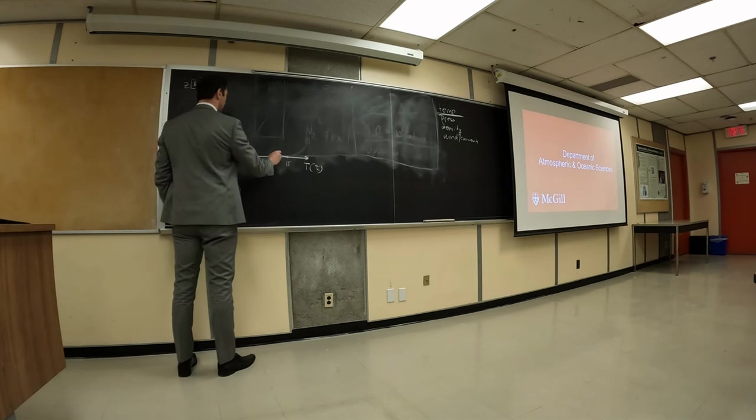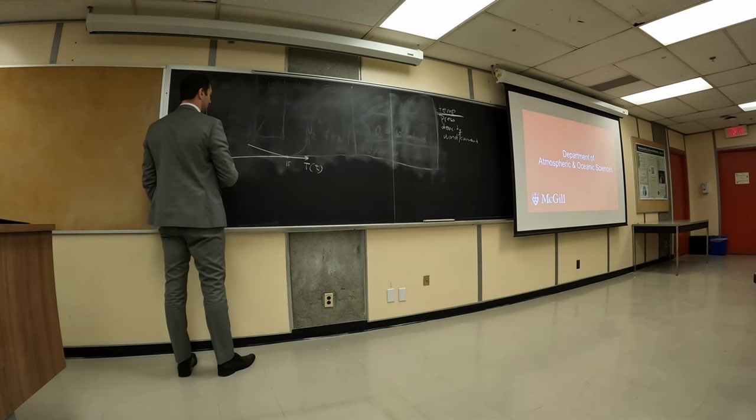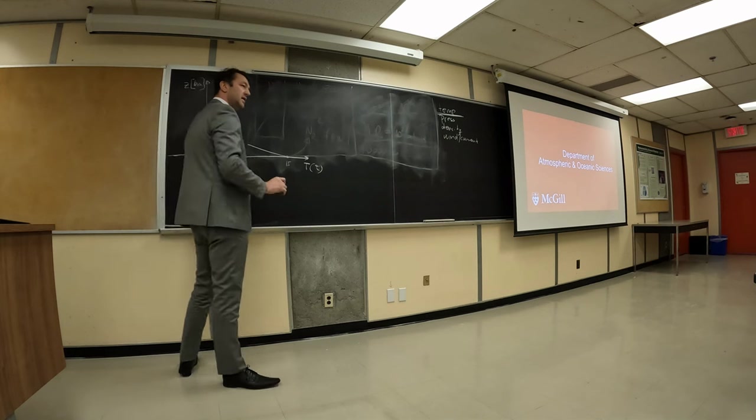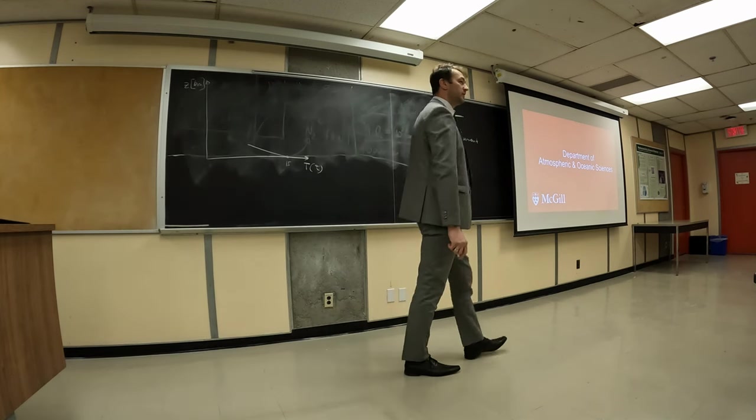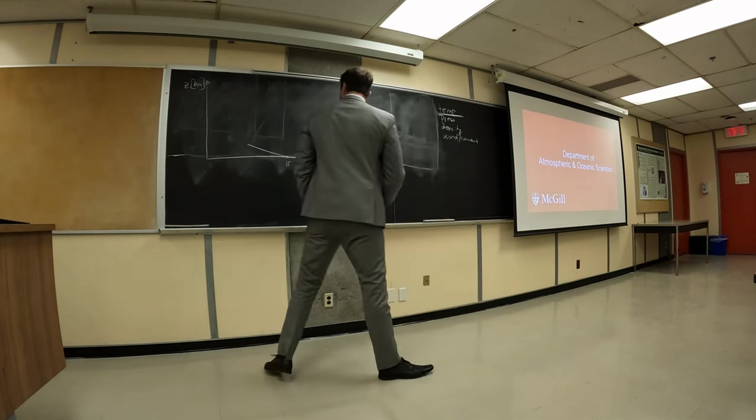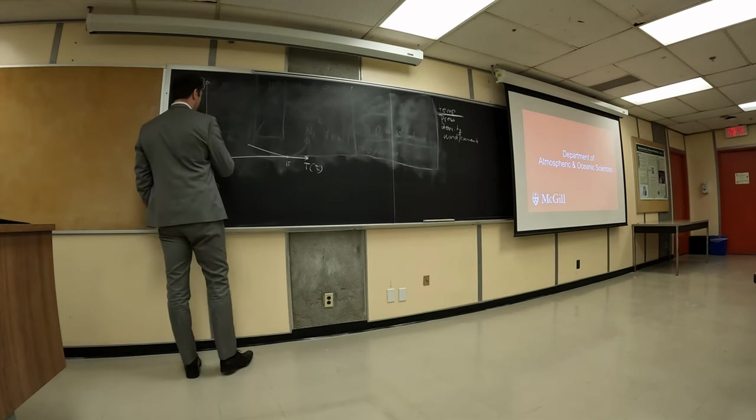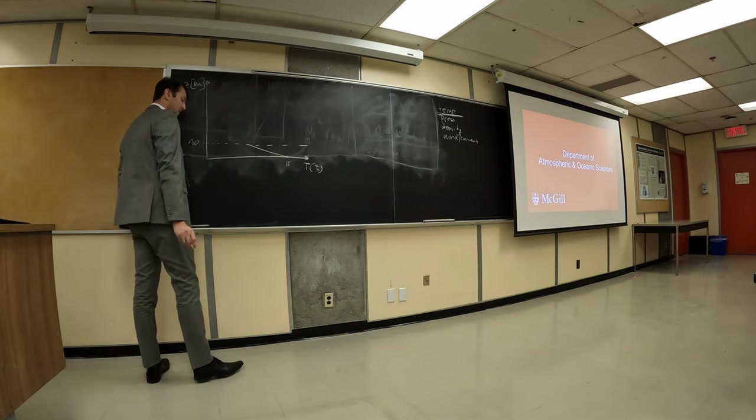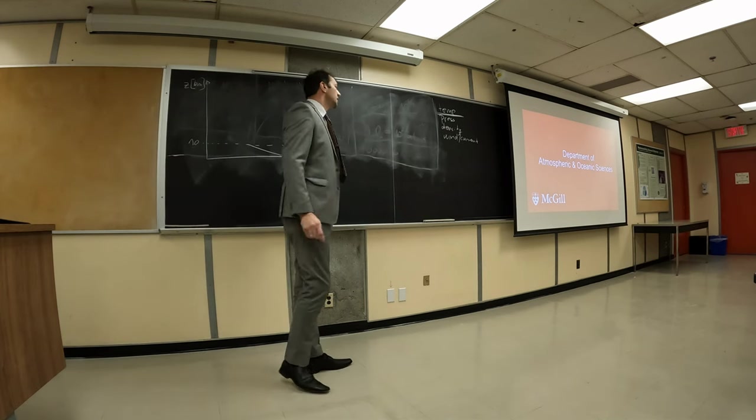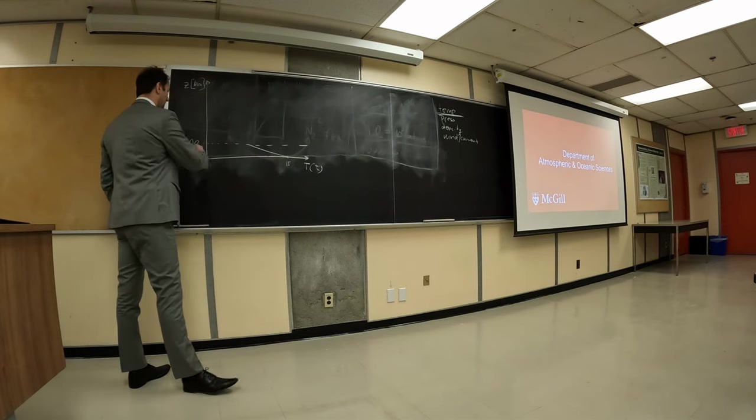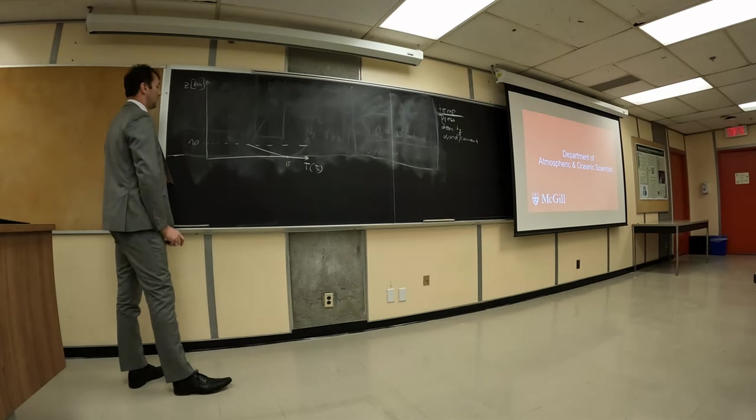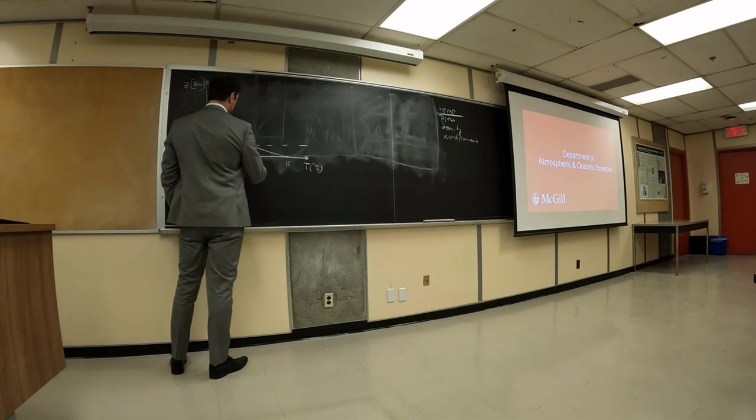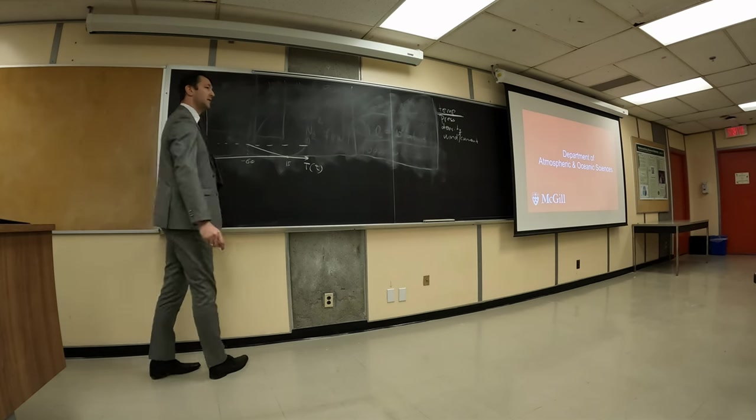If you take all stations around the world, average over the whole year, you get something like this. Temperature first decreases. Everybody, both of you were correct. And it decreases at a rate of about 6.5 degrees per every kilometer that you go up. And it decreases up to a height of about 10 kilometers. 9, 10, 11, in tropical regions, 18. Because we are in Montreal, I'll say 10. So here at these heights, temperature is about negative 56, 57, 8. I'll say 60. It's a nice number.